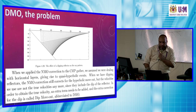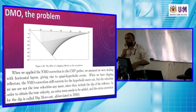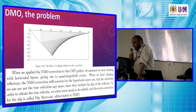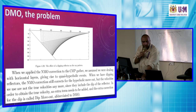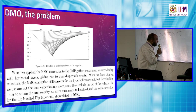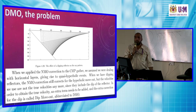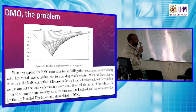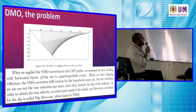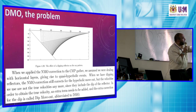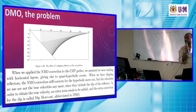Now we go to dip move-out. We have another complication to the problem. We start with a horizontal interface in a homogeneous medium, and now we are turning back to the situation where we have a dipping interface. The upper panel shows the effect of the dipping interface.